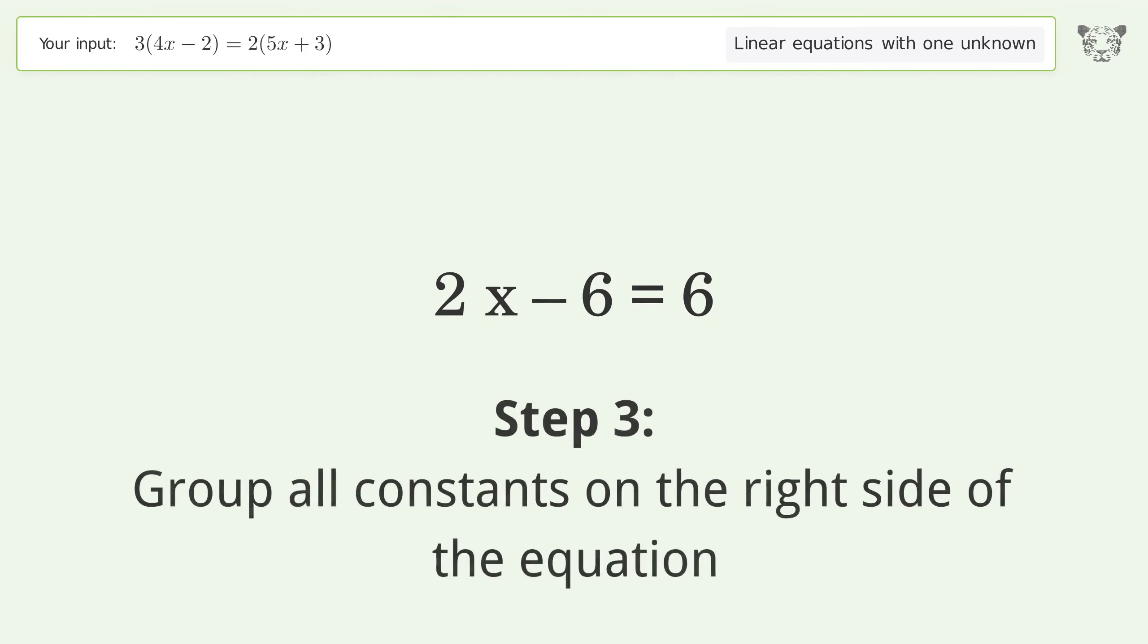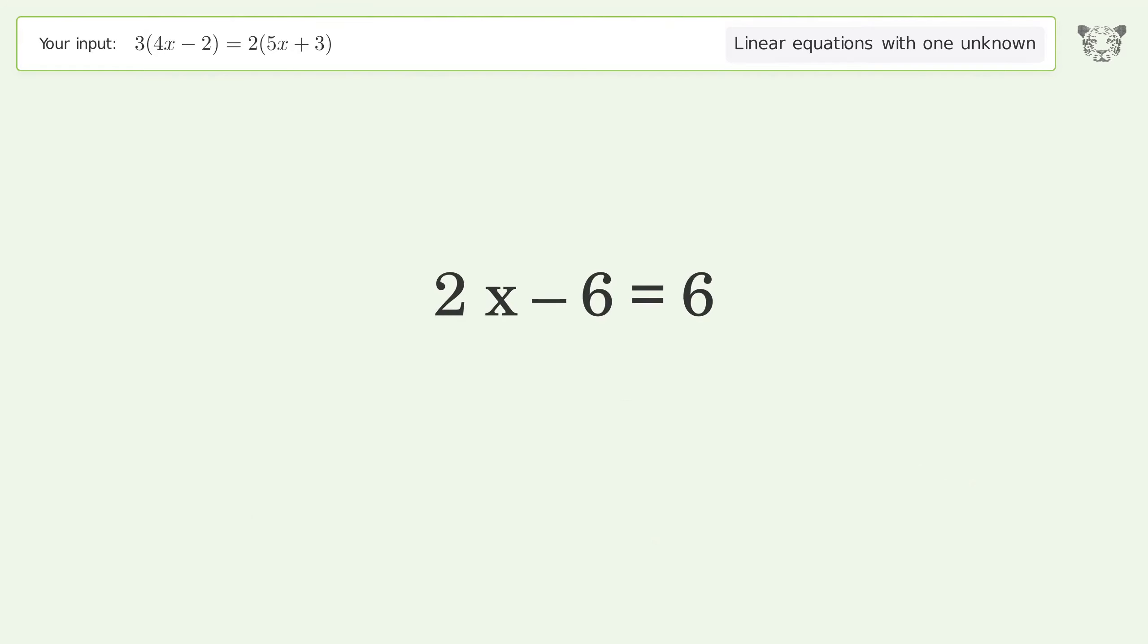Group all constants on the right side of the equation by adding 6 to both sides. Simplify the arithmetic.